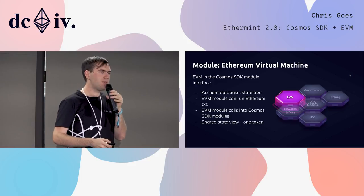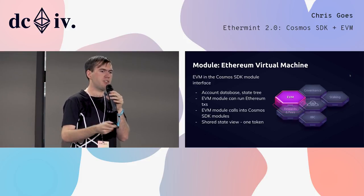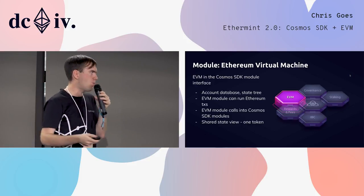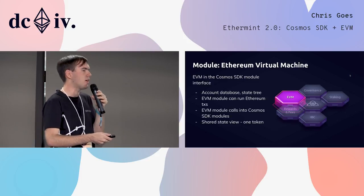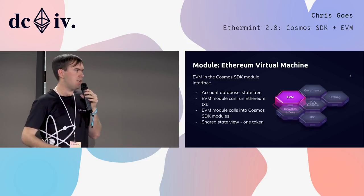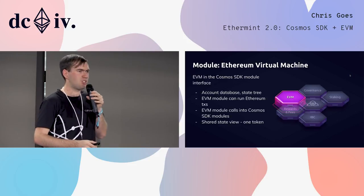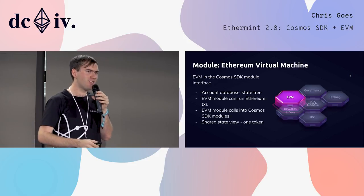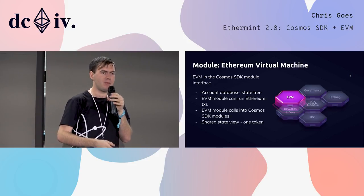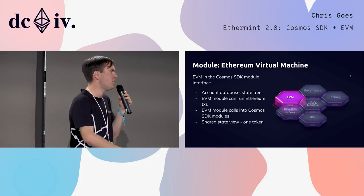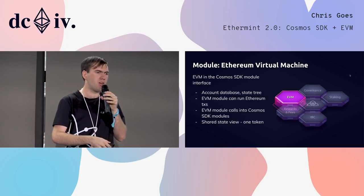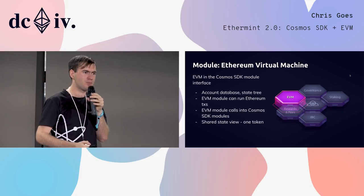In order to enable this, we have implemented a shared state view. There is one token — only needs to be one token on this blockchain — which will be ether (quote unquote), message.value for those of you familiar with Solidity. But it will also be the token used for governance, possibly for proof-of-stake and fee distribution, and the other Cosmos SDK modules.